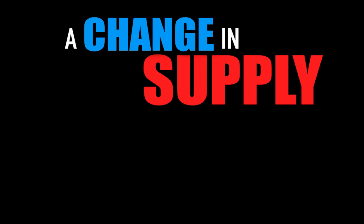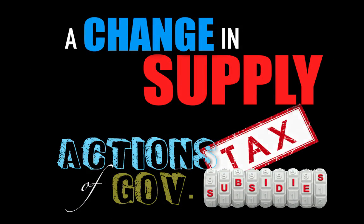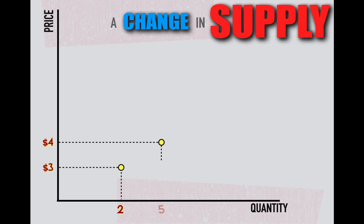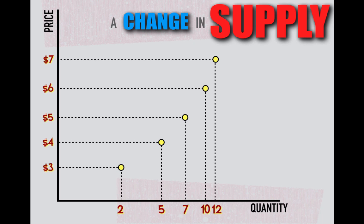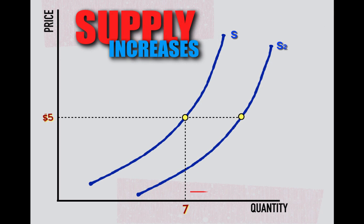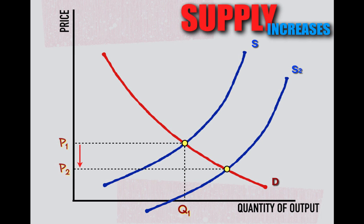Just like demand, supply can also fundamentally change in the market. Among the factors that can affect supply are resource prices, actions of government like taxes and subsidies, and the productivity of resources. Supply is defined as the different quantities of goods and services that firms are willing and able to produce at different price levels in the market. When factors fundamentally cause supply to increase, this means that firms are more willing and able to supply greater quantities at every price level, or are more willing and able to supply the same quantity at lower prices. When supply increases, the supply curve shifts to the right, and at a new equilibrium with demand, we'll see product prices decrease and quantity of output increase.